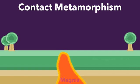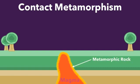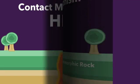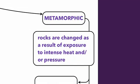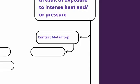Anywhere you see the orange, you're going to have some metamorphic rock. This is caused primarily by heat. Let's fill this in on our flowchart. The first type is contact metamorphism, and this is caused by contact with heat. Whenever a rock comes into contact with magma or lava, it is burned or metamorphosized by that heat.